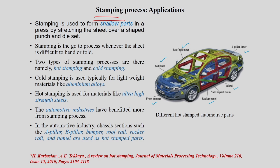Stamping is a very conventional process used in industries to make many components which cannot be made by simple bending or folding. This stamping process involves mostly stretching-type deformation, used to form shallow parts by stretching the sheet over a shaped punch or die. Like sheet forming processes, stamping can be divided into hot stamping and cold stamping depending on working temperature.